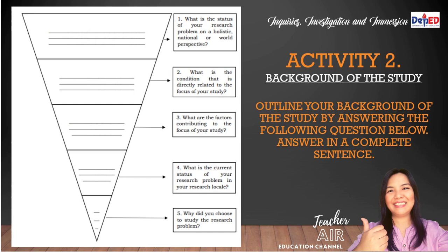Here is an activity for the background of the study. Outline your background of the study by answering the following in complete sentences: number one, what is your research problem on a holistic, national, or world perspective; number two, what is the condition directly related to the focus of your study; number three, what are the factors contributing to the focus of your study; number four, what is the current status of your research problem in your research locale; number five, why did you choose to study this research problem. Take a screenshot or write this in your notebook.